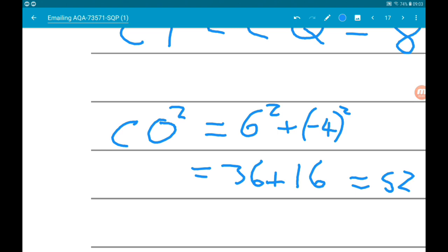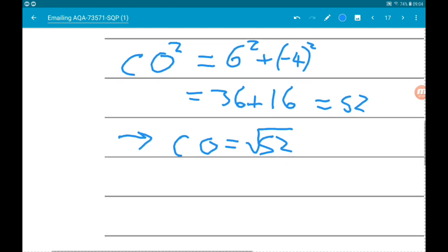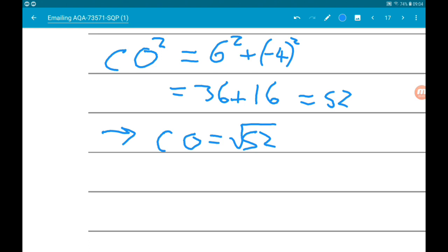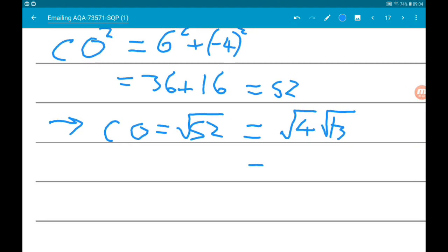Now we know that CO squared is 52. So CO is equal to root 52 and root 52 is going to simplify to root 4 root 13. And that is going to give us 2 root 13.